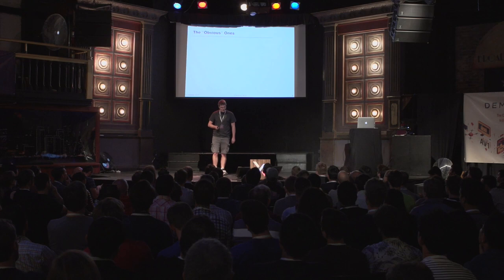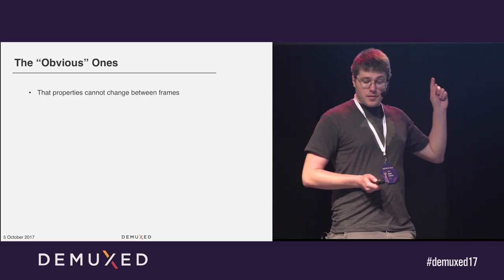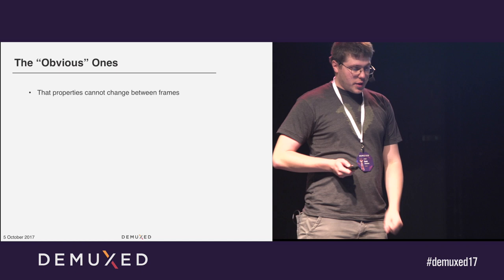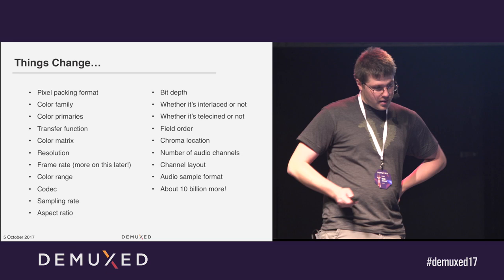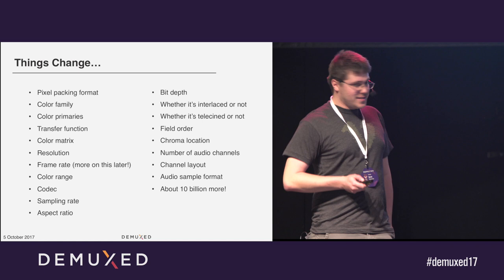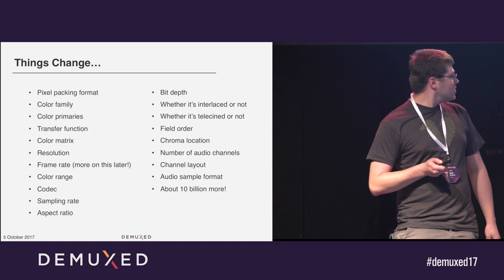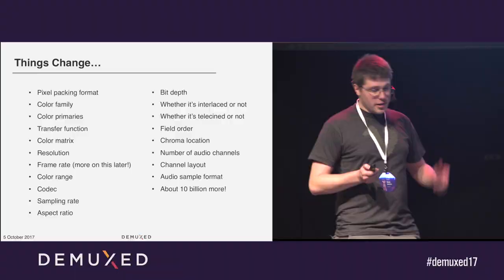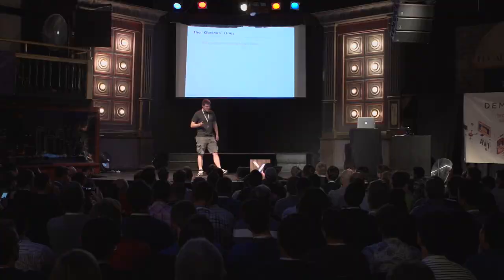So we're going to start with the obvious ones. It's not as much as you'd think — a lot of properties can change between frames. This is especially annoying when it's live. Imagine every single frame is a different resolution coming in, and you have to handle this: re-initialize the encoder every time, that kind of stuff.